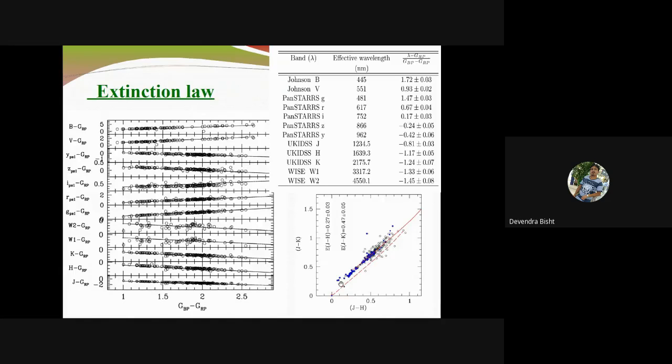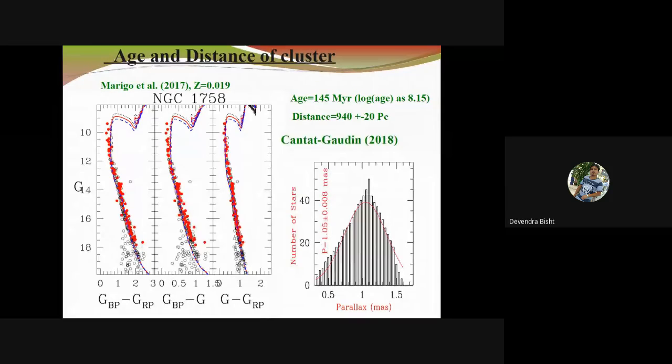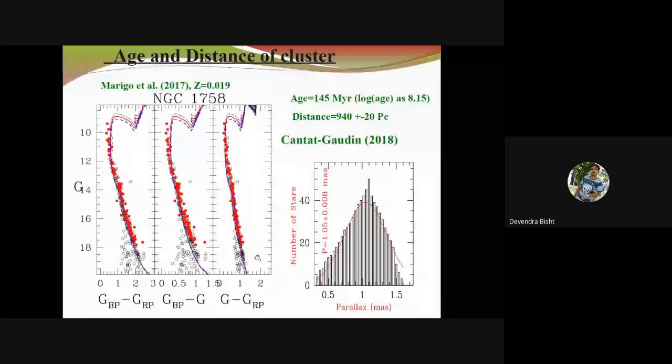Using the J minus K color diagram, we have estimated interstellar reddening also. Now we fitted the theoretical isochrone to the observed color magnitude diagram. We used the isochrone given by Marigo et al. of solar metallicity. You can see all the black open circles are the probable cluster members which we have estimated in this analysis, and red dots are the matched stars with Kharchenko and Goodin. Kharchenko and Goodin previously gave some membership for few stars, but this data is limited to 18 magnitude. We are giving a number of stars towards the fainter end, which is very helpful to understand the star formation scenario in clusters or the Milky Way galaxy. From here we estimated the cluster age is 145 million years and the distance is 940 parsecs. Using the Gaia parallax of the cluster members, we also estimated distance, and both distances are showing very good agreement with each other.